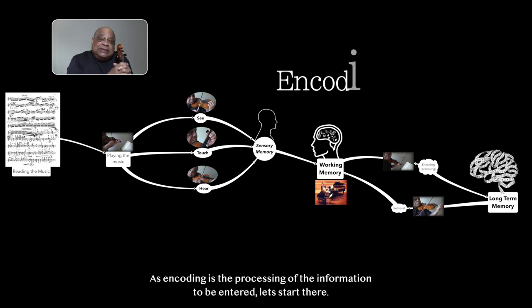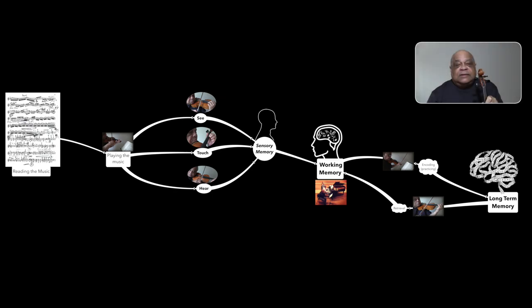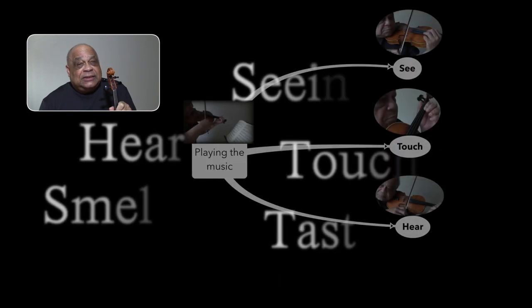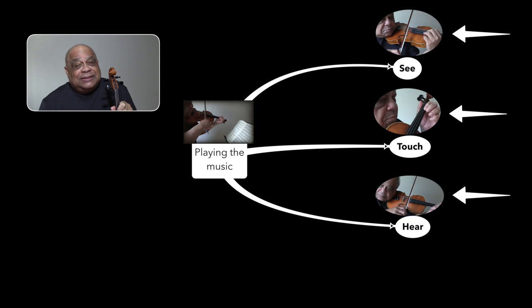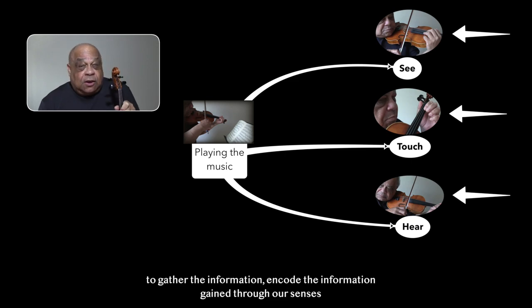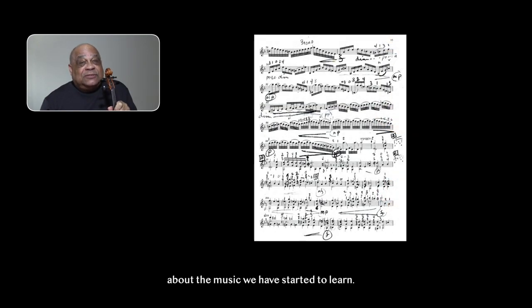So as encoding is the processing of the information to be entered, let's start there. So we are looking at the piece of music for the absolute first time, beginning the learning process. I should note that though we have five senses - seeing, hearing, touching, smelling, and tasting - we only use three: seeing, touching, and hearing, to gather and encode the information gained through our senses about the music we have started to learn.